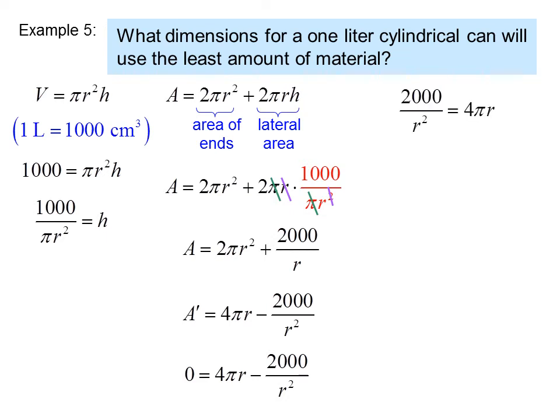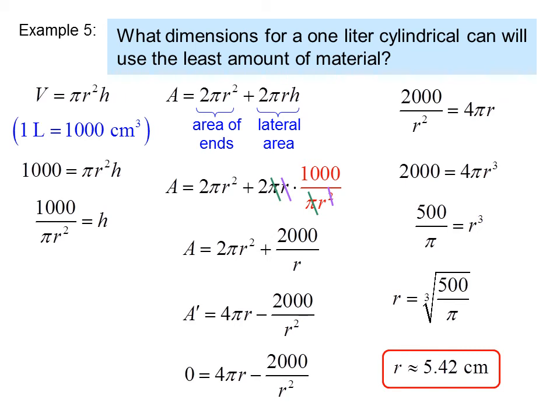So we add 2,000 over r² to both sides. Multiply both sides by r². Divide by 4π. And take the cube root of both sides. So we have r equals the cube root of 500 over π, or r equals approximately 5.42 centimeters.